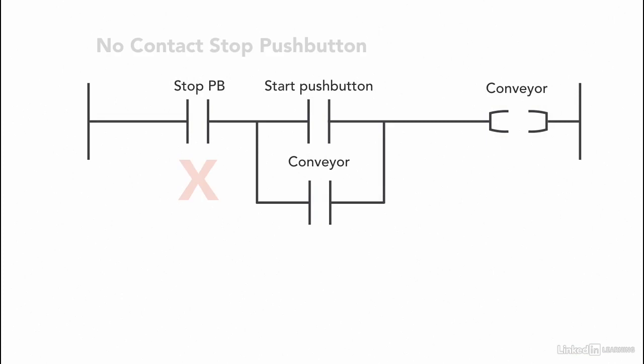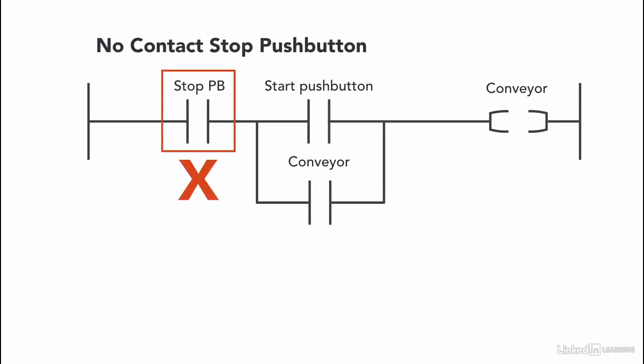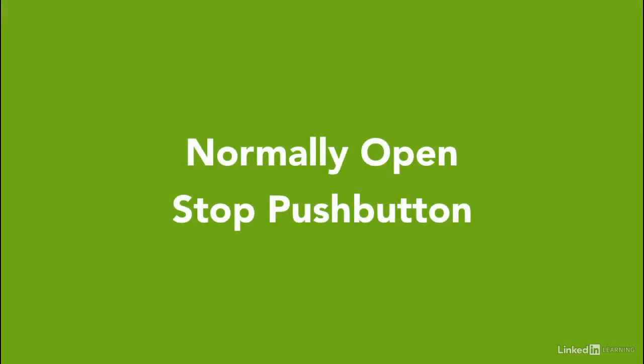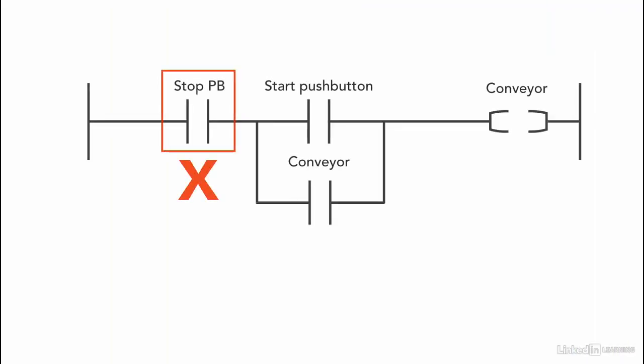Another mistake a PLC programmer might make is using an XIC instruction for the stop push button. Since we're using a normally open contact for the stop push button, we cannot use an XIC instruction, because then the stop push button would need to be pressed for the conveyor to start, and we don't want that.